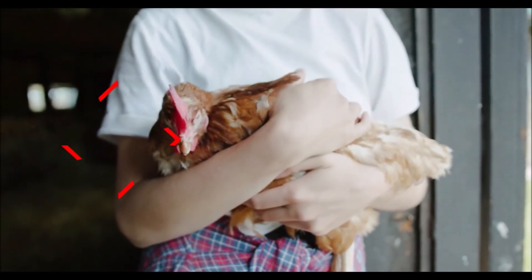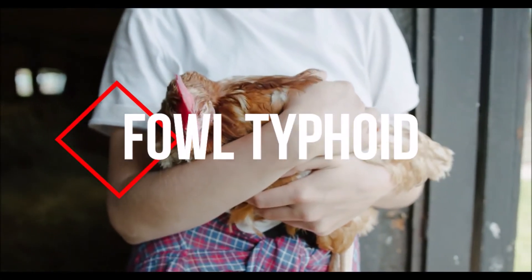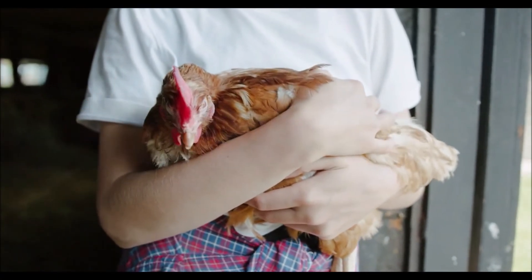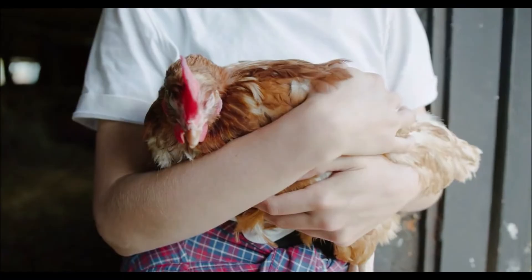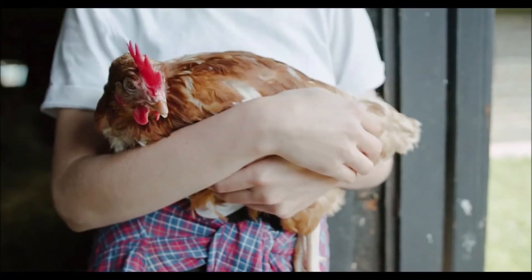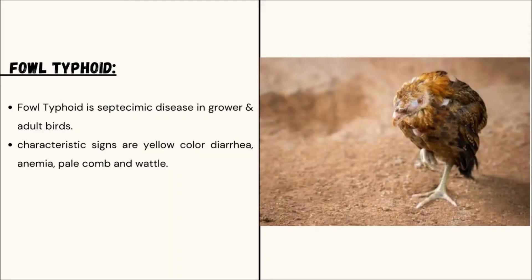This video is about the foul typhoid, its importance as a systemic disease in grown and adult birds. Foul typhoid is a septicemic disease in grown and adult birds.